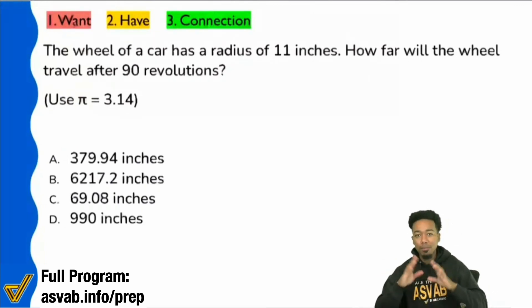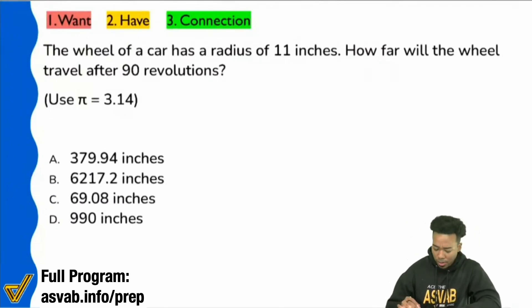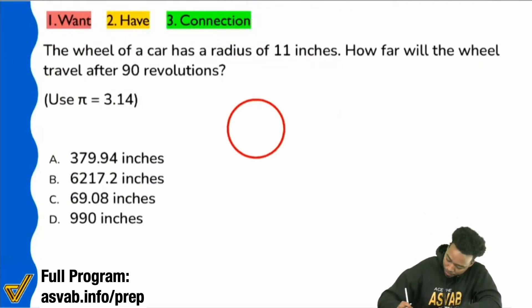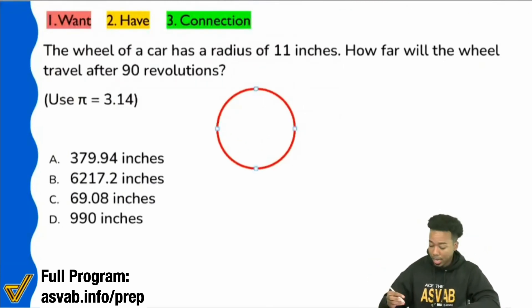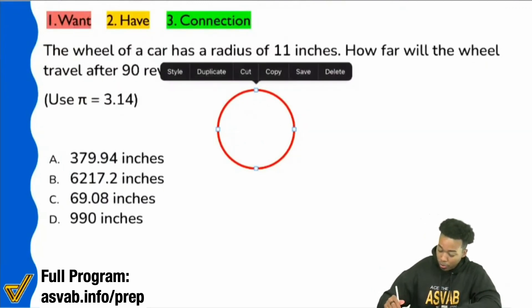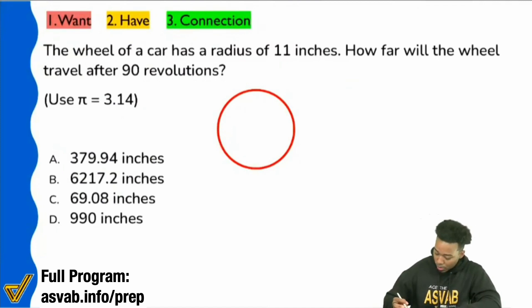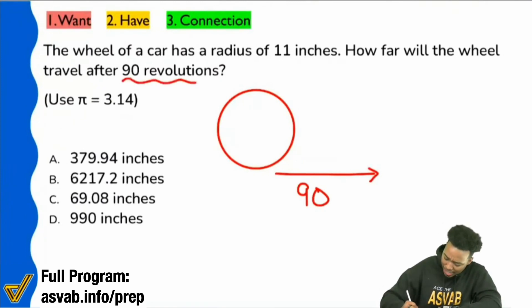But if we're talking about pure English, everyone, is it safe to say that if you notice here, wheel of a car, how far will the wheel go, travel, after 90 revolutions? So is it safe to say that we have this perfectly designed wheel here by me? And is it safe to say that pretty much what we're doing is we're seeing how far this wheel goes after 90? What is that? 90? What is that word there?